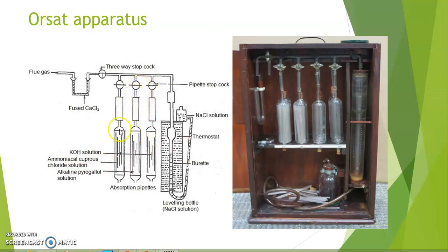In the second absorption chamber, an alkaline pyrogallol solution is used — it is an ammoniacal pyrogallol solution. This basic reagent is used to absorb the incoming oxygen gas from the flue gas sample.